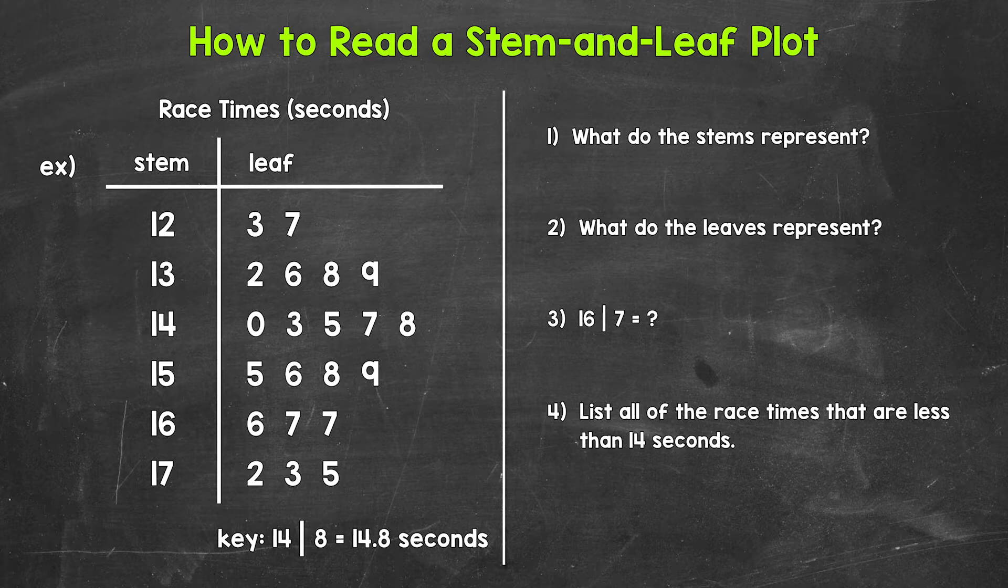When working with stem and leaf plots, every value is split into a stem and a leaf. So the race times are split. Here are all of the stems, and then here are all of the leaves. Stems on the left, leaves on the right.